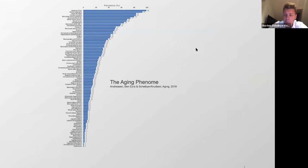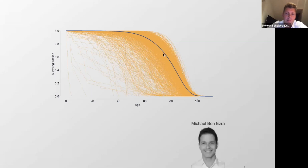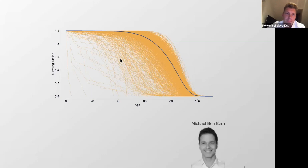We don't really understand why some people develop some diseases and why others develop different diseases. This is the survival curve of the Danish population, based on data from about 5 million people. If we look at pharmacy prescription data for the entire Danish population going back about 40 years, we can assign cohorts of individuals prescribed a certain drug throughout their lifespan.